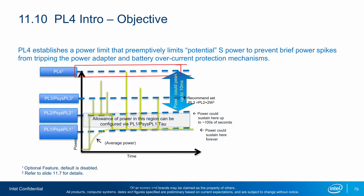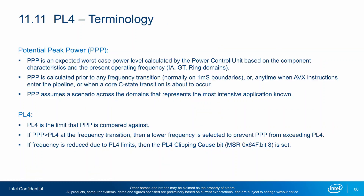Contrary to PL1, PL2, and PL3, PL4 is not a measured power limit but an estimated power limit. The power limit triggers preemptively when the CPU power control unit projects an extreme short power surge beyond PL2 in the very next instant. It projects the power by calculating the Potential Peak Power, or PPP, which is a value based on component characteristics and the present operating frequency. When PPP exceeds PL4, the PCU will automatically set a lower frequency.